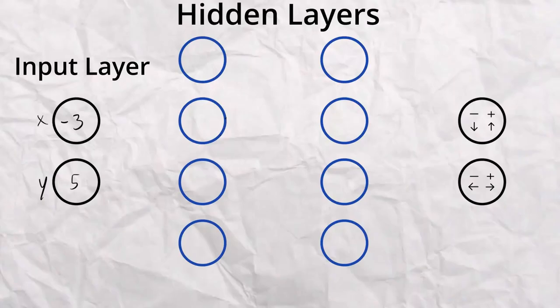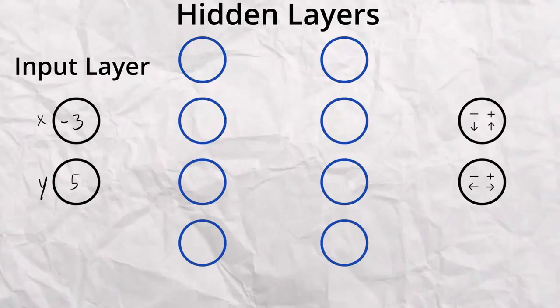And the final layer is called the output layer. The output layer is the final decision that the network makes based on the inputs we give it. The more hidden nodes and layers your network has, the better it will be at solving more complex problems. However, that also means that it'll be much harder to train and it could take forever to find a solution.